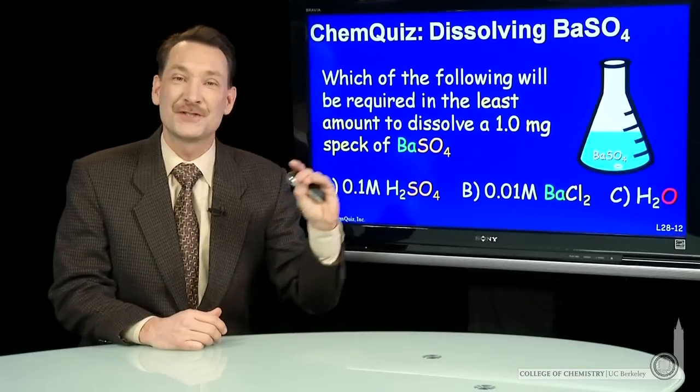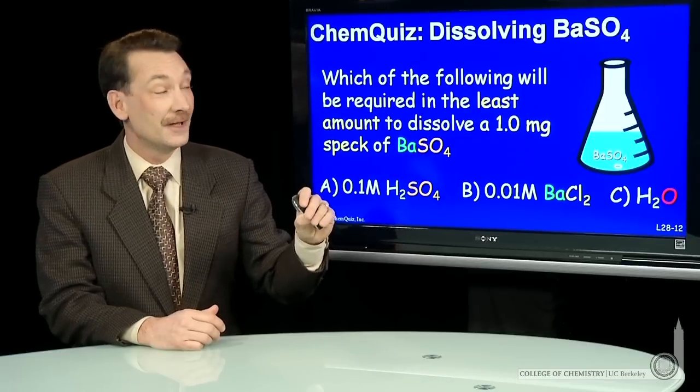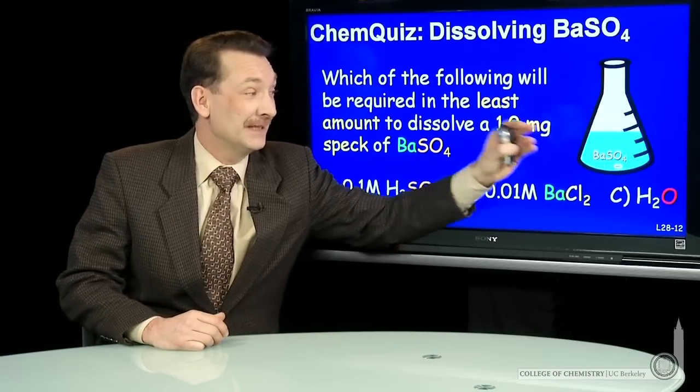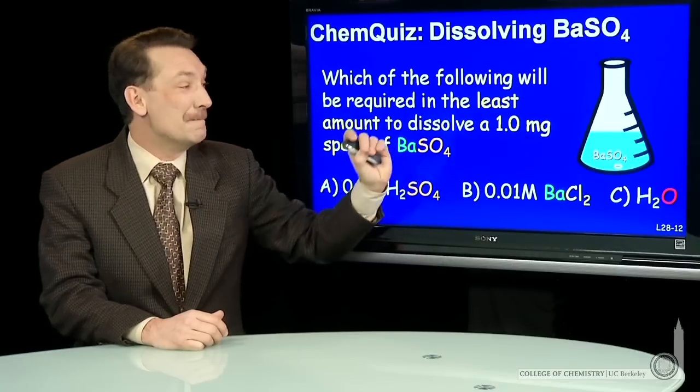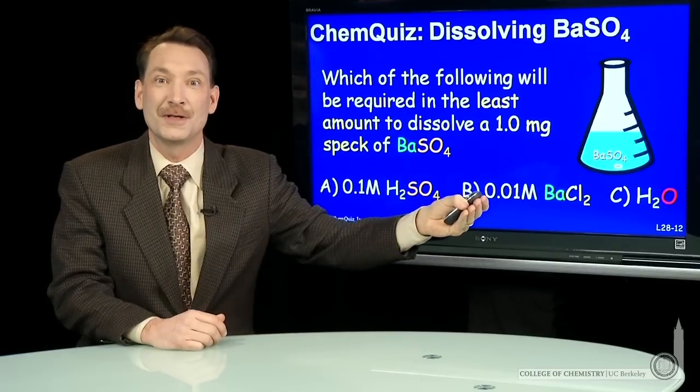Let's look at dissolving barium sulfate, a sparingly soluble solid, in water. If we try to dissolve it and a little tiny speck remains, say about a milligram remains in the bottom, what's the best way to dissolve that additional milligram?